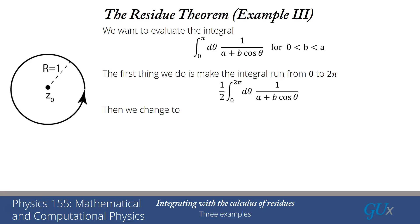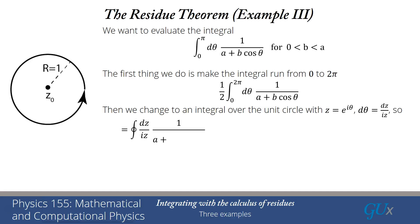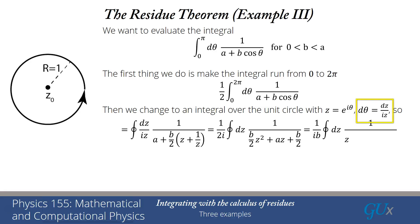First, we make the integral go from 0 to 2π by symmetry — it's just one half the integral from 0 to 2π of the same integrand. Then we substitute z = e^(iθ) to map onto the unit circle. The modulus of z is 1, so we're on the unit circle. Computing dz = ie^(iθ)dθ = iz·dθ, so dθ = dz/(iz). Now substituting: we have an integral around the unit circle of dz/(iz) times 1/(a + b·cos θ). Cosine θ = (e^(iθ) + e^(−iθ))/2, which becomes (z + 1/z)/2 — written as 1/z rather than the complex conjugate of z, so it remains an analytic function.